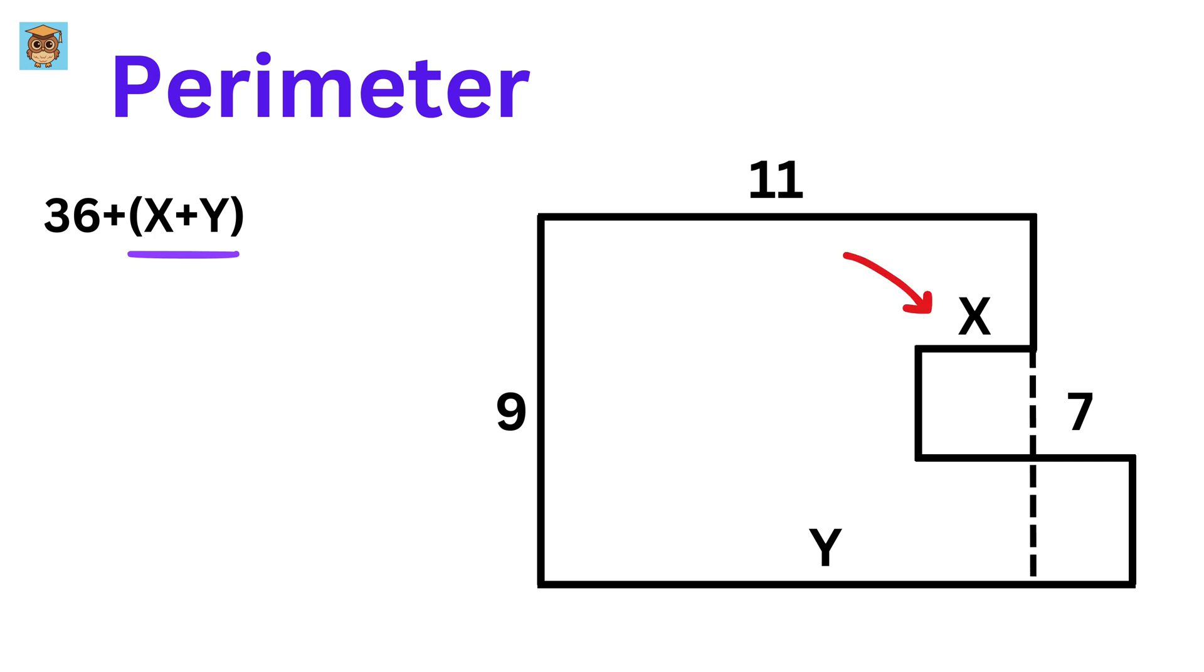If this is X, then this is also X, right? And since this length is 7, so this length will be 7 minus X, right? Therefore, this side length will also be equal to 7 minus X.